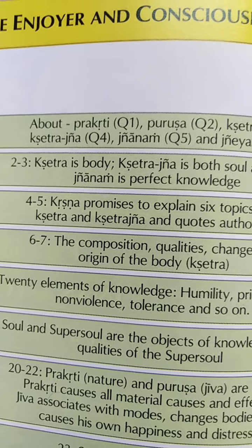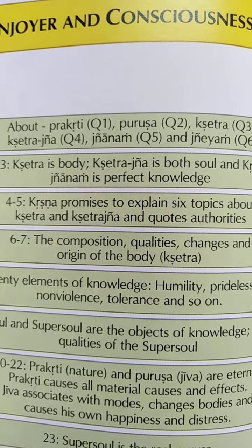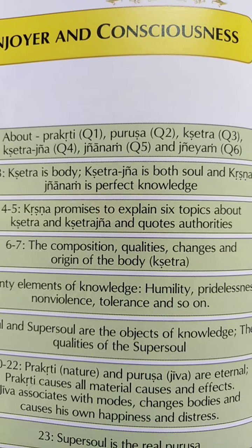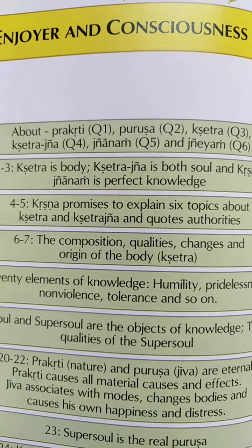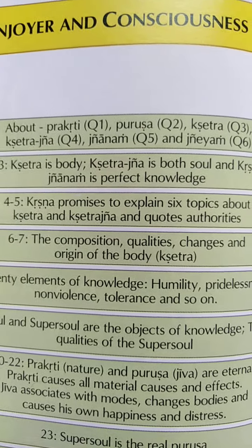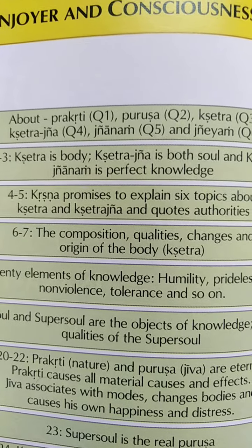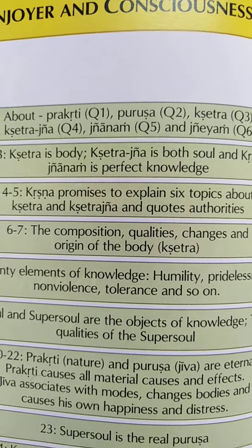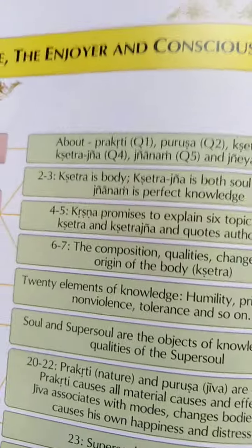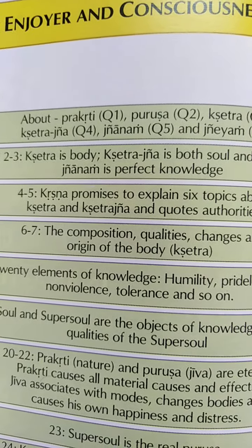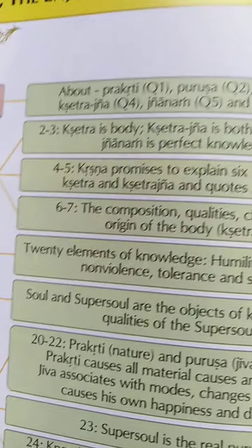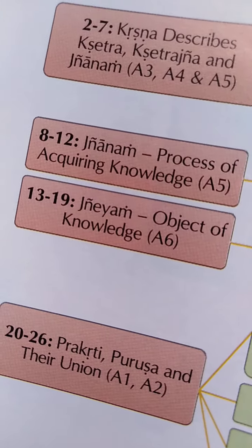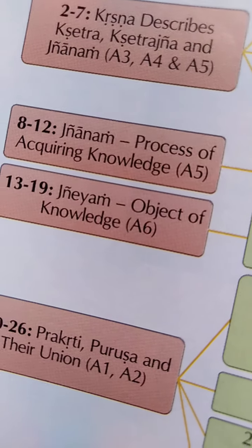In the fourth and fifth shloka, Krishna promises to explain six topics about Kshetra and Kshetrajna and quotes the authorities. Then in the sixth and seventh shloka, Krishna explains the composition, the qualities, the changes and the origin of the body — the Kshetra. So he explains all the details about the Kshetra.